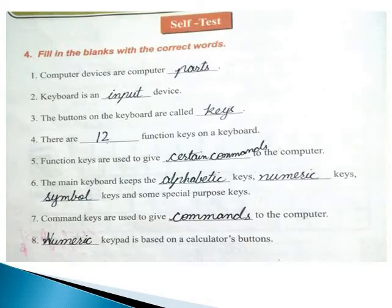Now page number 20. This is fill in the blanks with the correct words. Computer device is computer parts. Keyboard is an input device. The buttons on the keyboard are called keys. There are 12 function keys on the keyboard. Function keys are used to give certain commands to the computer.